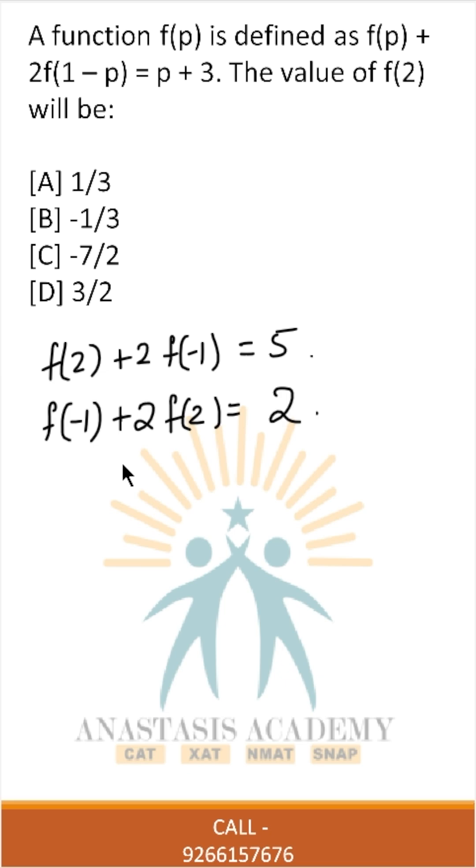This is great, now we can solve this simultaneously. We can multiply this equation by 2 to get 2f(2) + 2f(-1) = 5. I simply copied the first equation as this.